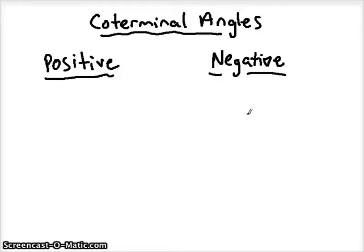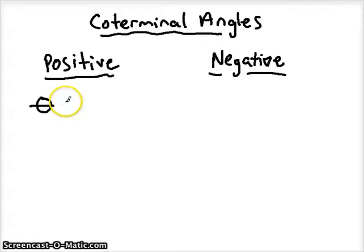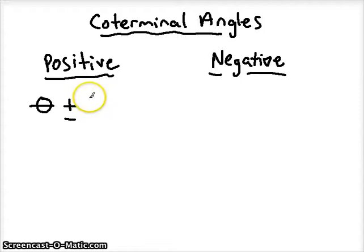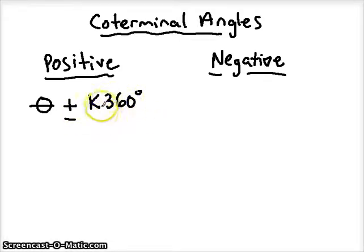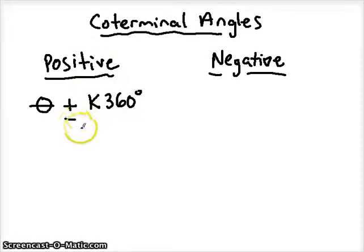We are going to use one method here. In order to get a positive coterminal angle, we're going to take our initial angle — the coterminal angle is going to be like the other side of the angle, or the inverse. To get a positive angle, we're either going to add or subtract a multiple of 360 degrees. So we're either going to add 360 degrees, or add 720 degrees, or 3 times 360 if needed. Sometimes we can subtract 360 degrees and still get a positive angle, and in those cases we'll use subtraction — even though it seems counterintuitive.